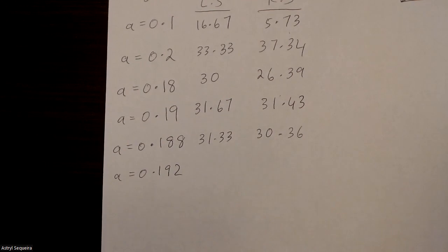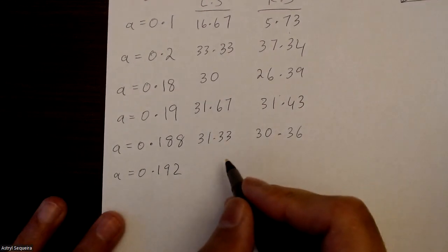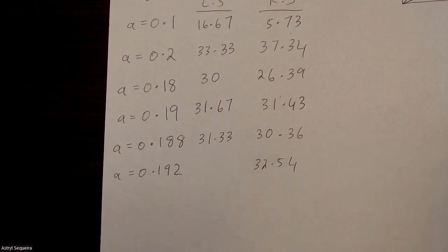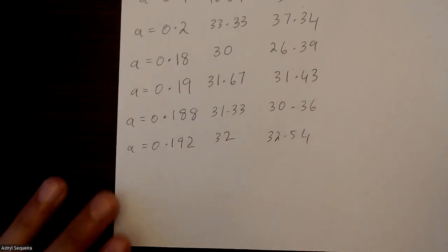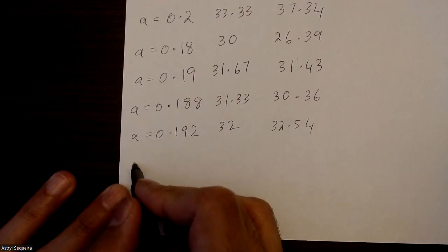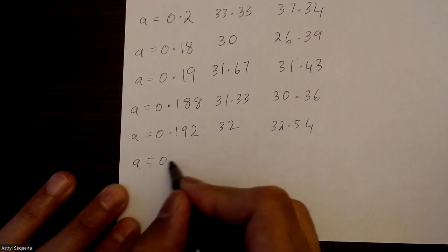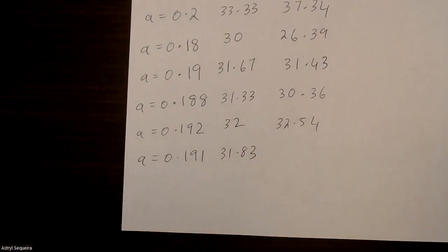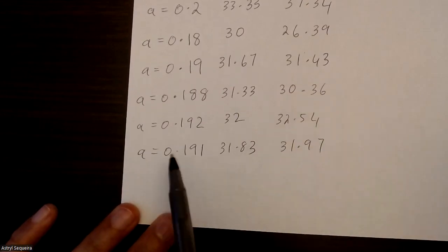Which means I should try 0.192, something slightly above 0.19. So I'm going to try 0.191, which is obviously the only one early in the middle. And if I use 0.191, I get 31.83 and 31.97. So now it's really, really close.